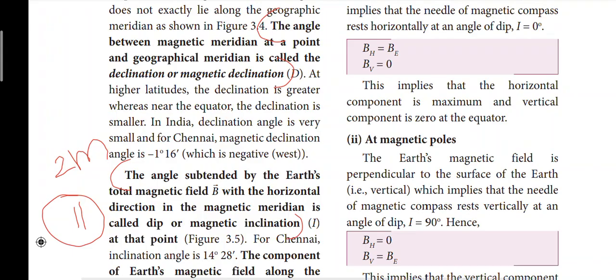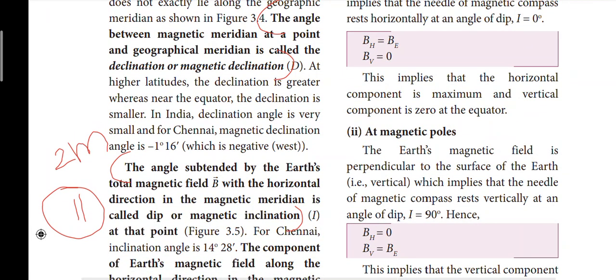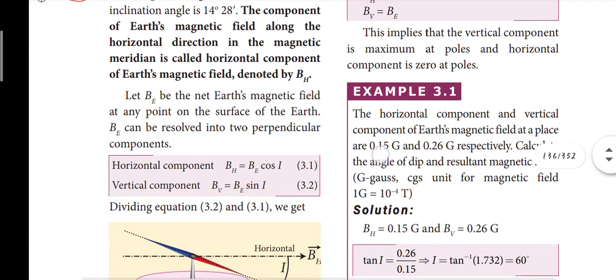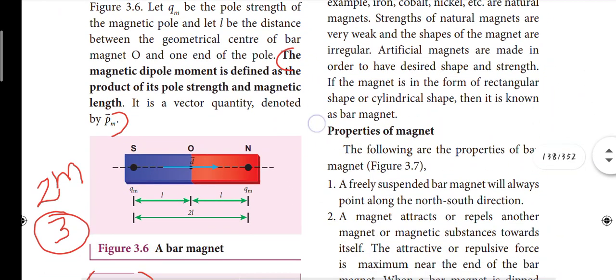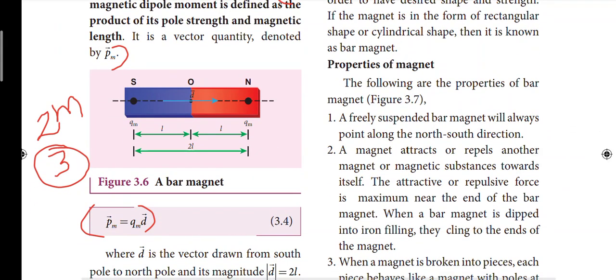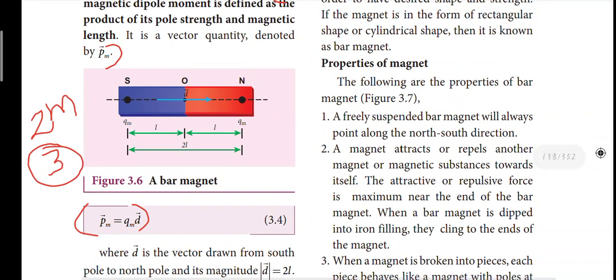Starting from page 128: magnetic declination and magnetic inclination. Mark in red color. Next, page 130: the magnetic dipole moment. The magnetic dipole moment is defined as the product of pole strength and the magnetic length — between the south pole and north pole. The equation is: pm is equal to qm times d vector.